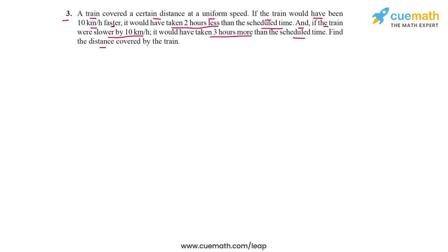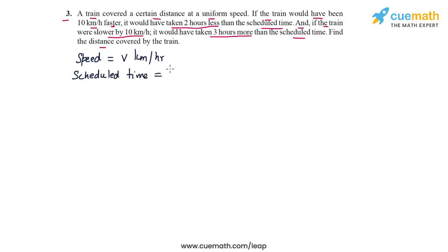To solve this, we assume the unknowns. Let the speed of the train be v kilometers per hour, and let the scheduled time of the journey be t hours. There is a third unknown — the distance — but that can be derived from v and t, so the distance is simply v times t, or vt kilometers.